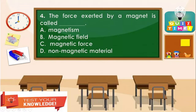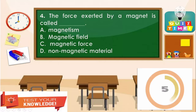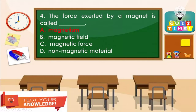Item number 4: The force exerted by a magnet is called blank. A. Magnetism, B. Magnetic field, C. Magnetic force, D. Non-magnetic materials. The correct answer is letter A — Magnetism. Good job, kids!